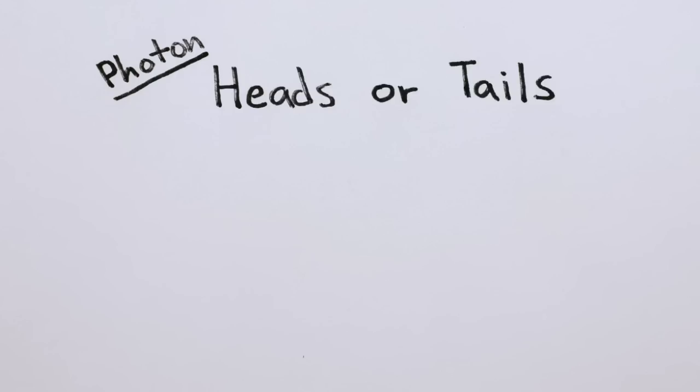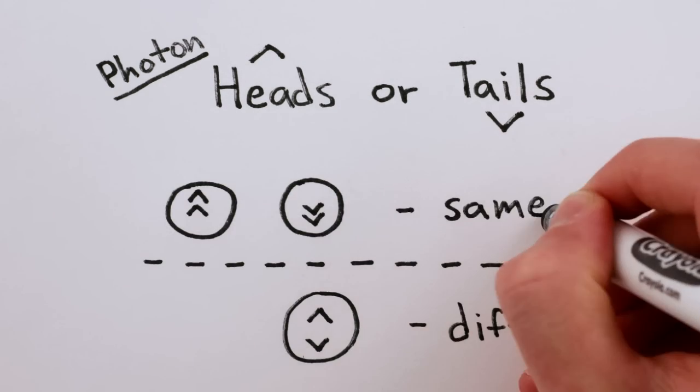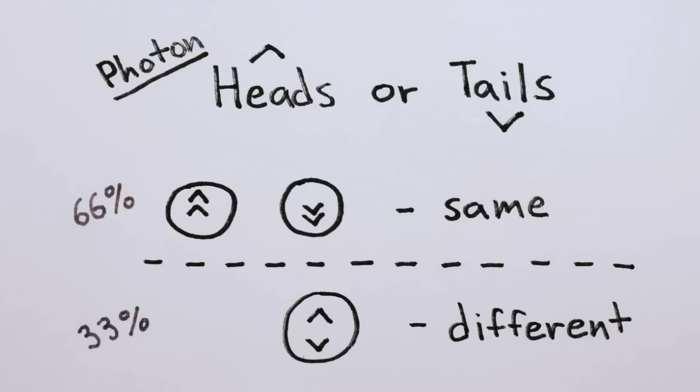So in a photon-flipping experiment, that means there's only one way for them to be in different states, but two ways for them to be in the same state. So they're more likely to be in the same state.